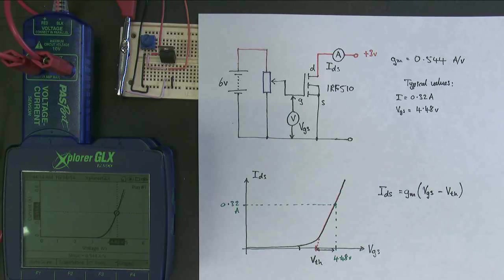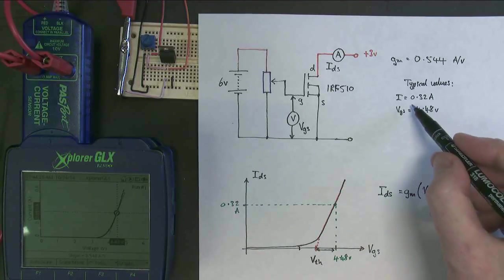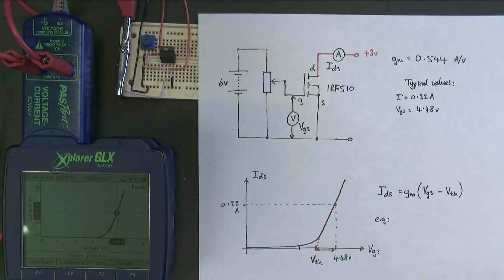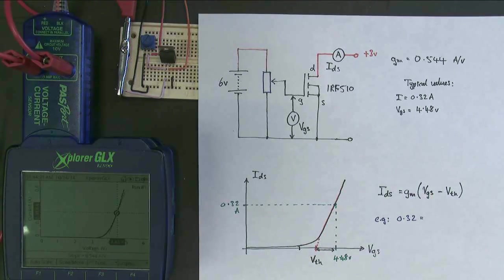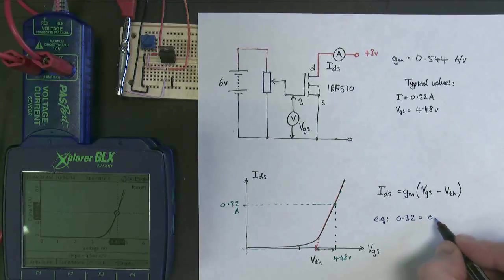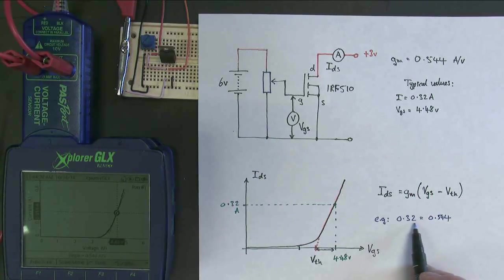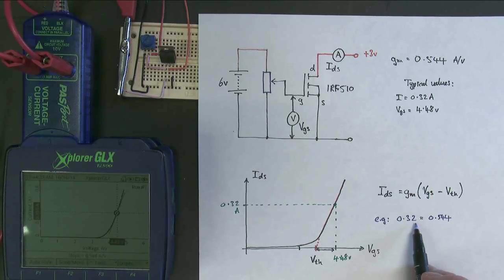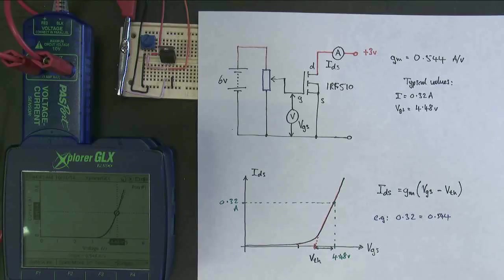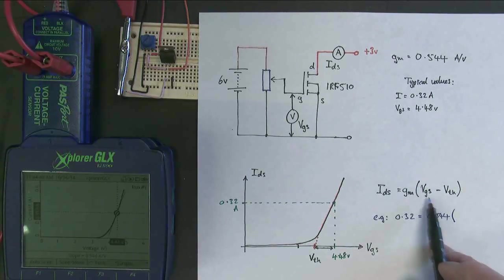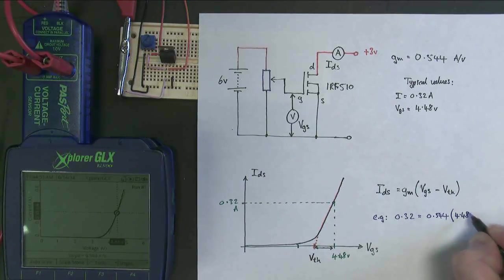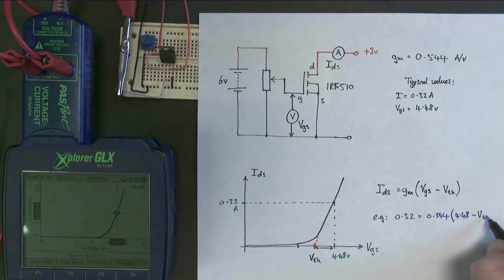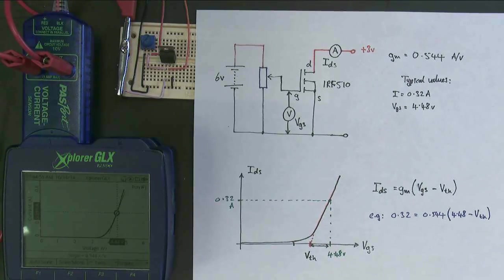So what we're going to do is we're going to put our numbers that we have from here into this equation. So we'll call this an example. We get 0.32 equals gm, which is 0.544. I didn't take the exact value of this 0.319 off the data logger because I've already got a little bit of an offset on there anyway, so I'm not worried about level of precision. This is my gate source voltage, which gave me this particular current, 4.48. And this is the value I'm trying to find, the threshold voltage.